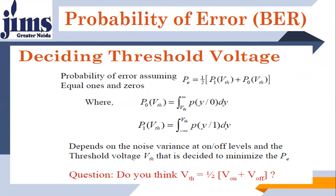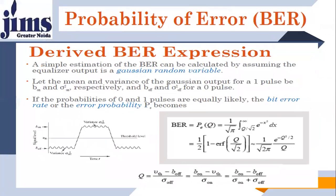These are the mathematical models for probability of 0 and probability of 1, with their limits. If something is below threshold we declare 0; above threshold, we declare 1. This gives us the mathematical equations for deciding the threshold voltage. A simple estimation of the bit error rate can be calculated by assuming the equalizer output as a Gaussian random variable, since noise in optical communication follows Gaussian distribution.